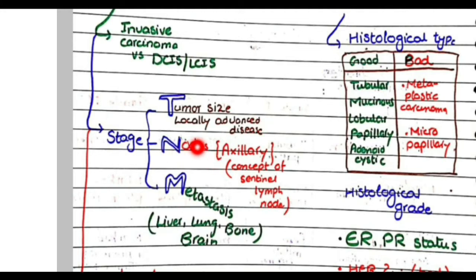If the number of lymph nodes involved are more, for example axillary lymph nodes, and if four or five lymph nodes are involved, then the prognosis will be worse as compared to if there is no involvement of lymph nodes.